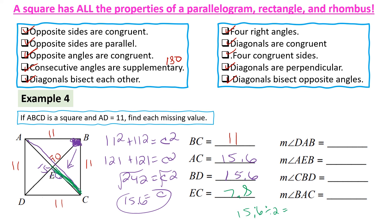The measure of angle DAB is 90 degrees. Angle AEB, in the center, is also 90 degrees. For angle CBD: the diagonals bisect the angle, so if the corner angle is 90, half of it is 45. Angle BAC is also 45 degrees, because diagonals bisect opposite angles — if the angle is 90, half is 45.